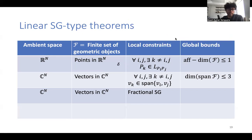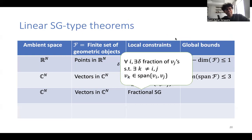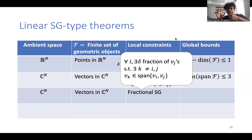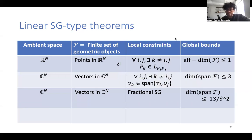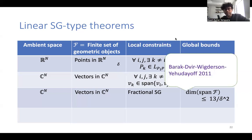In Cn there is also a fractional Sylvester-Galai version, where the fractional condition says we don't need local dependency for all pairs. Given any i, there is a delta-fraction of the rest of the vectors vj such that for those pairs vi, vj there is a vk in their span. With this fractional local dependence condition, there is still a global dimension bound depending on delta. This was done in the work of Barak, David, Wigderson, and Yehudayoff.